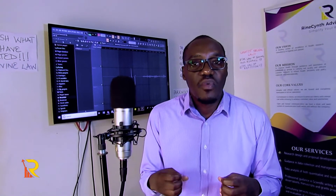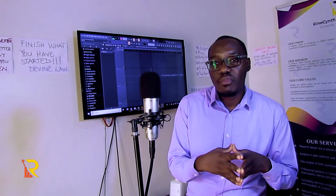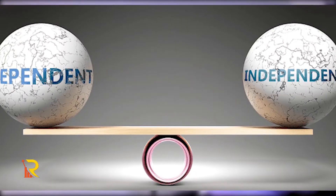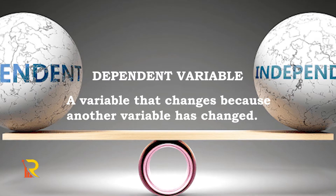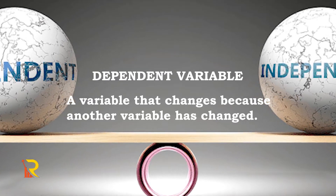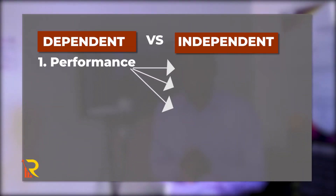Before talking about moderating variables, let me explain what a dependent variable and an independent variable are. A dependent variable is a variable that changes because another variable has changed — it changes according to the situation. An example is performance.